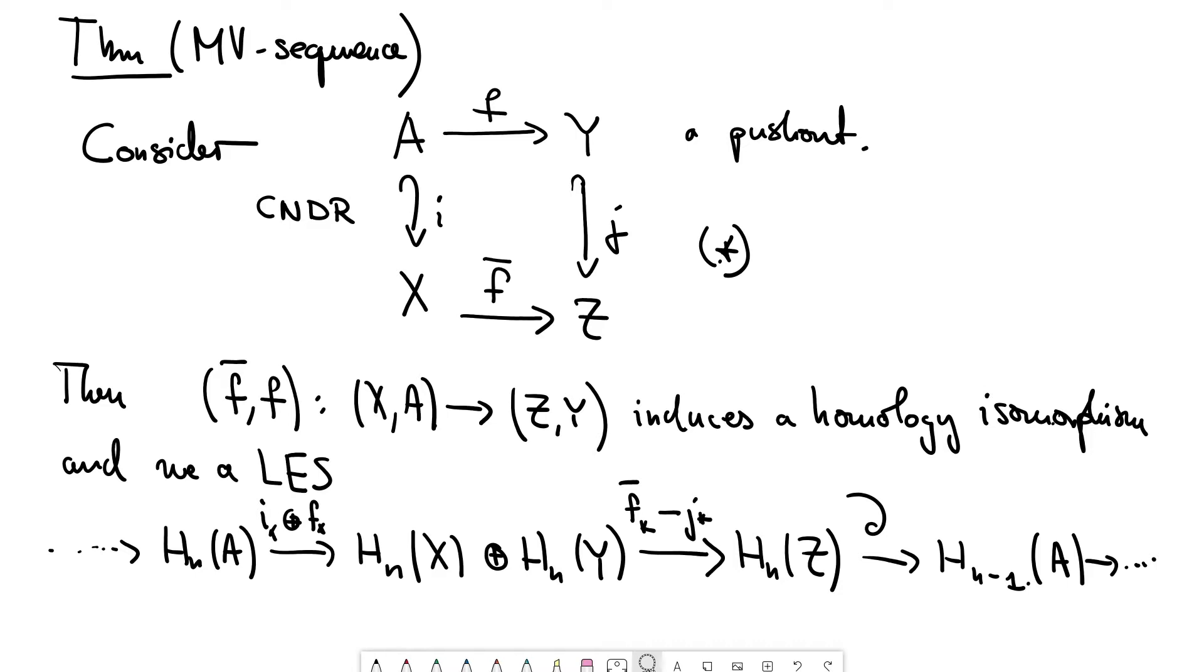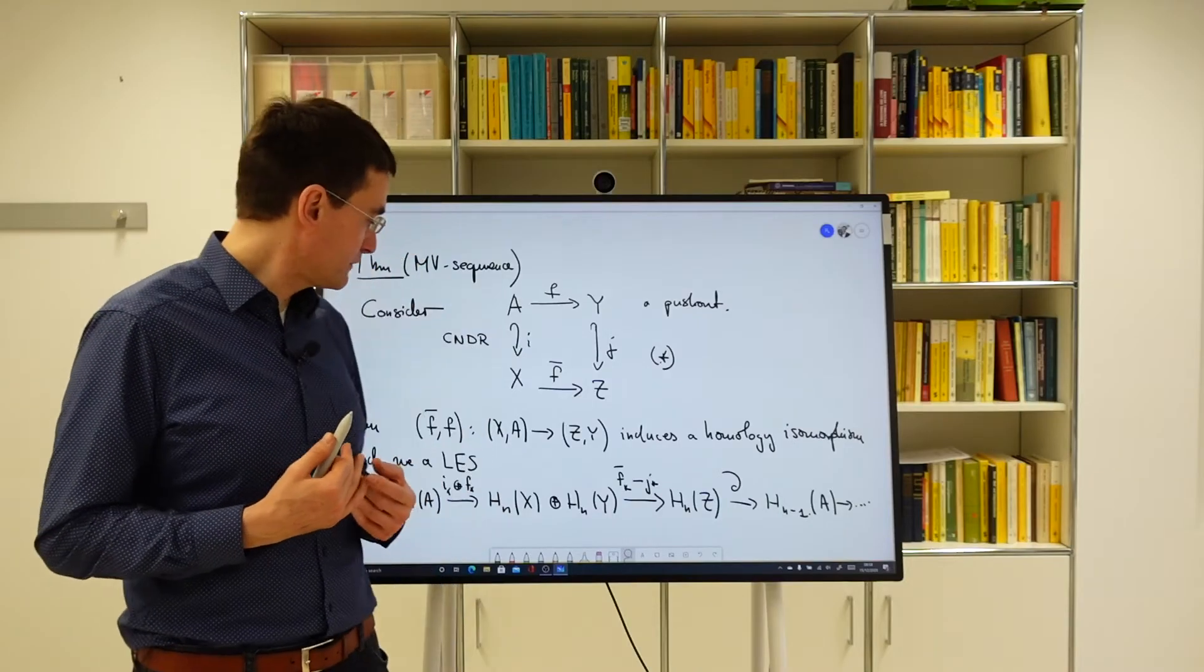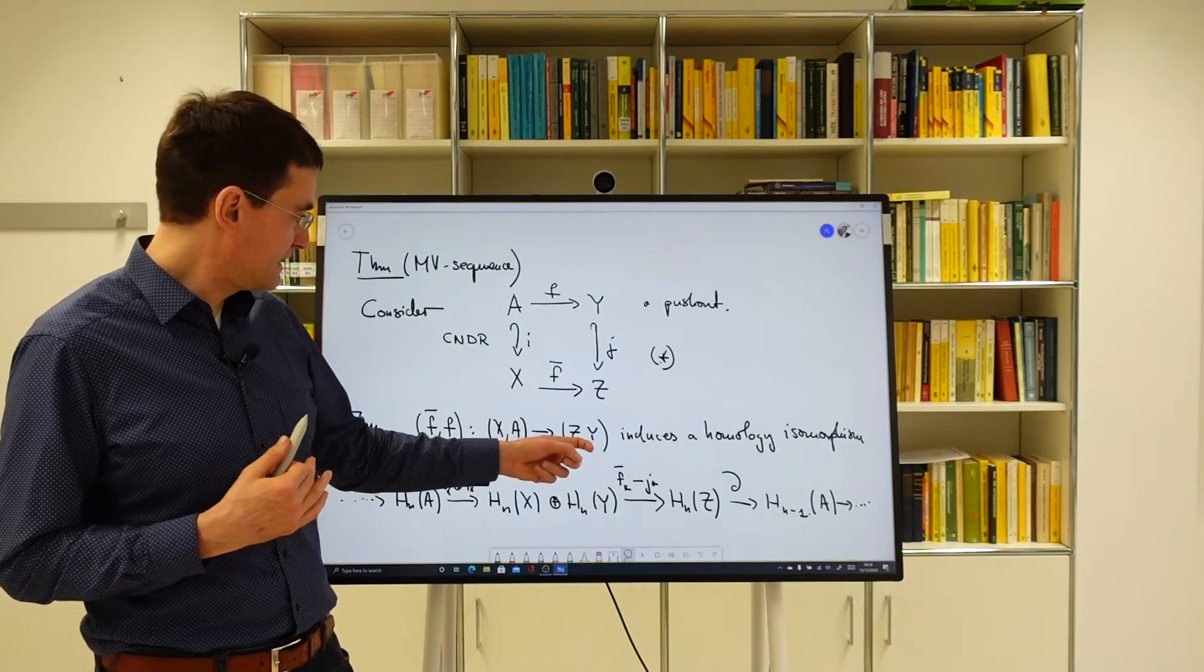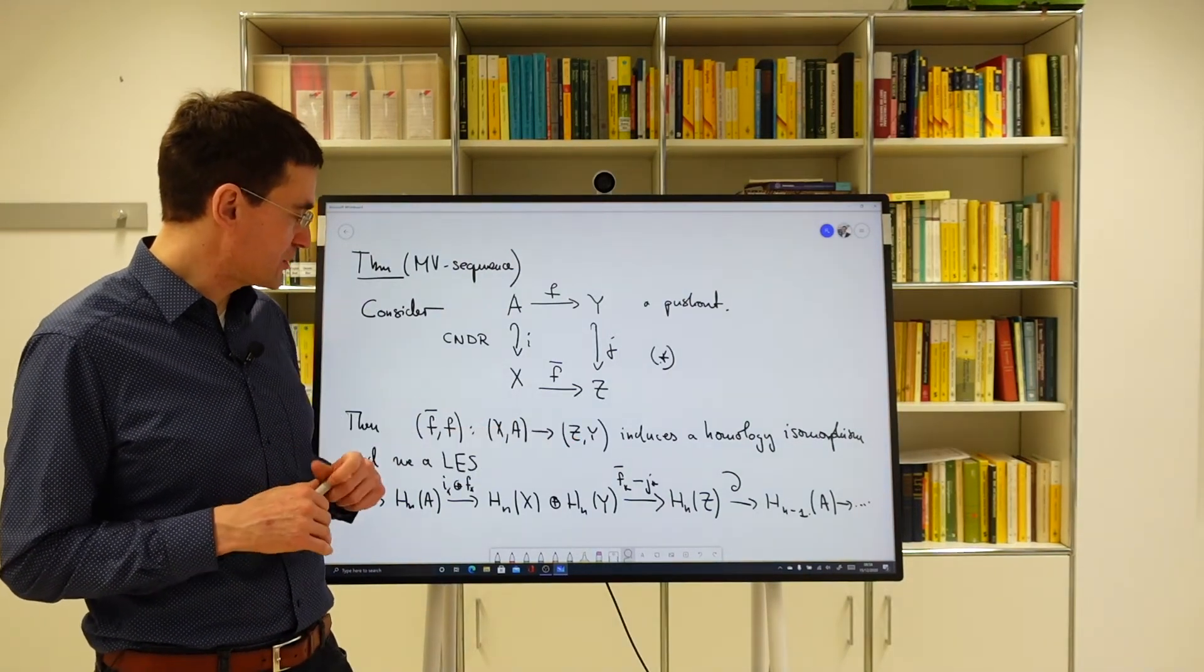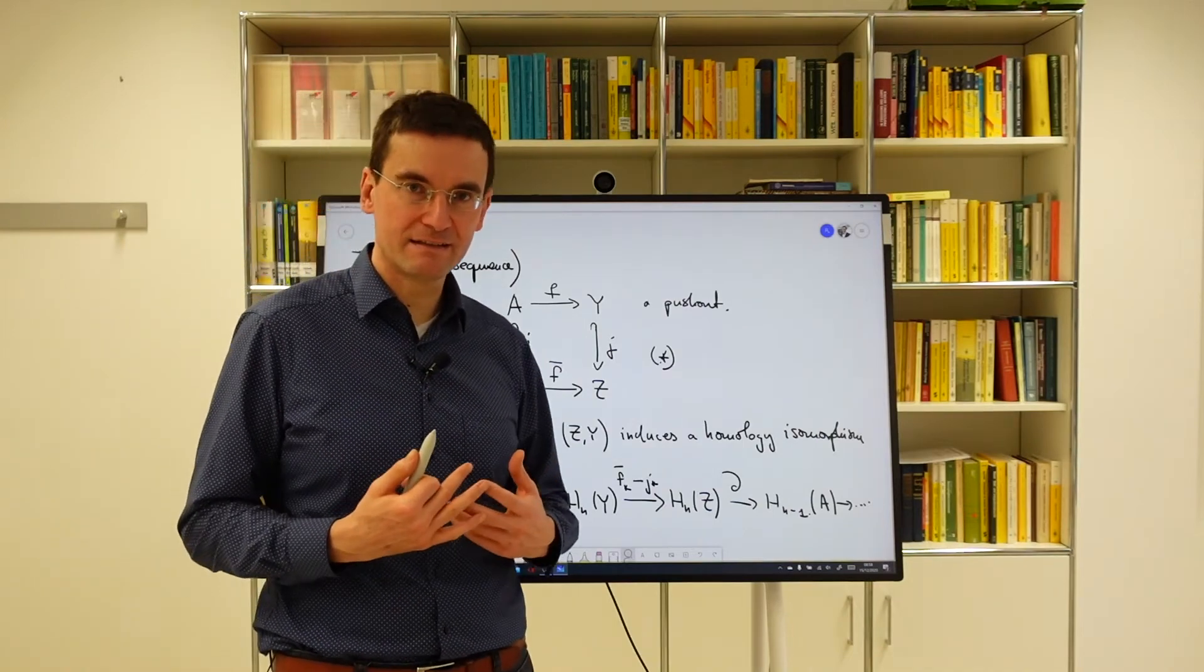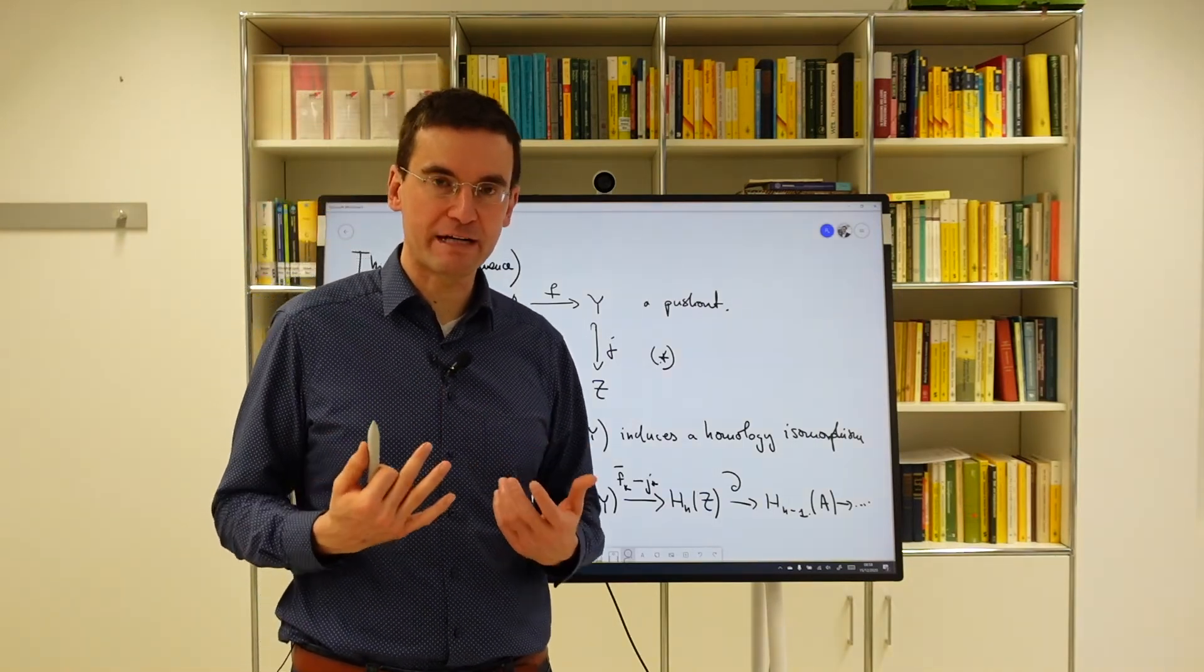Therefore all the maps in this pushout diagram are inclusions of closed subspaces. In that situation this condition here of being a homology isomorphism is exactly the condition of being an excisive triad.